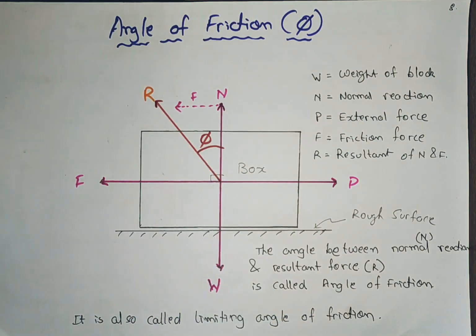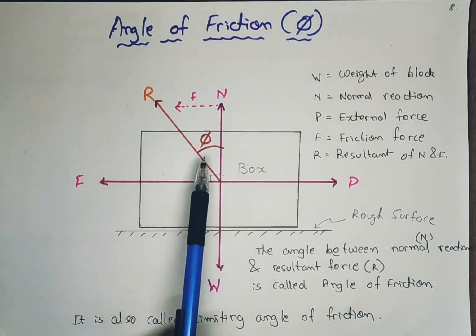And vice versa, if the roughness of the surface is less, then angle of friction is also less. It is also called limiting angle of friction. So for increasing the efficiency of any machine, the angle of friction should be less.